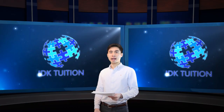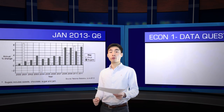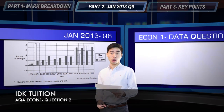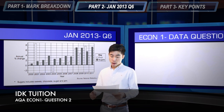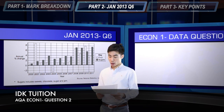We're going to take a look at exactly what I mean by different types of point of comparison by looking at the January 2013 question number six. Here we have two data series — one for fruit and one for sugars.